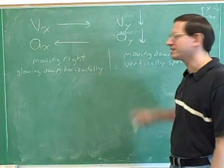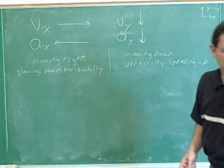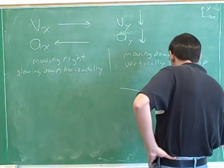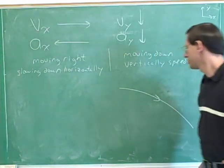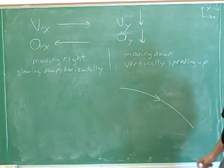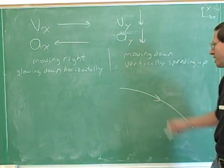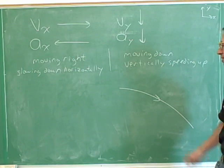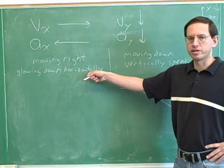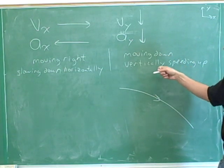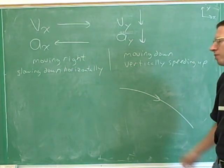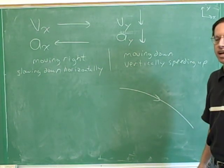Is it possible to be moving both to the right and moving down? Yes, very easy — I can draw you a path for something that's both moving to the right and moving down. An object following this path would be both moving to the right and moving down. In this case, we're thinking about an object that's moving right but slower and slower, and moving down faster and faster. You can already see that the motion of this object is starting to get kind of complicated.